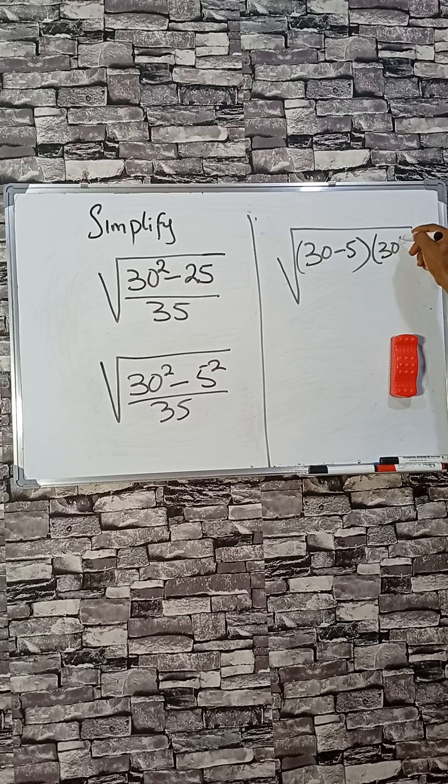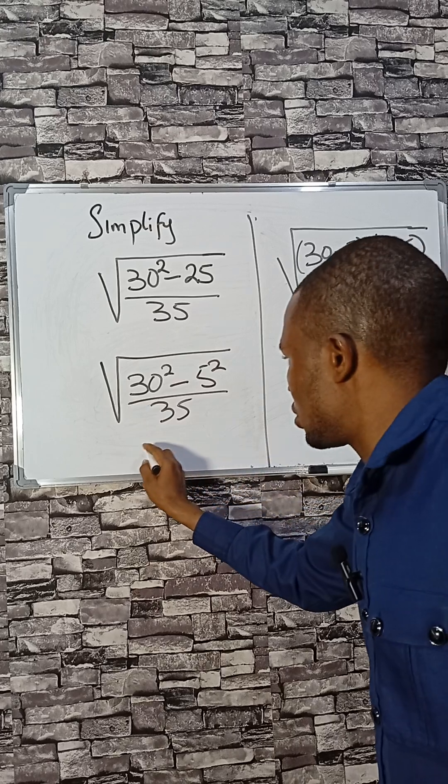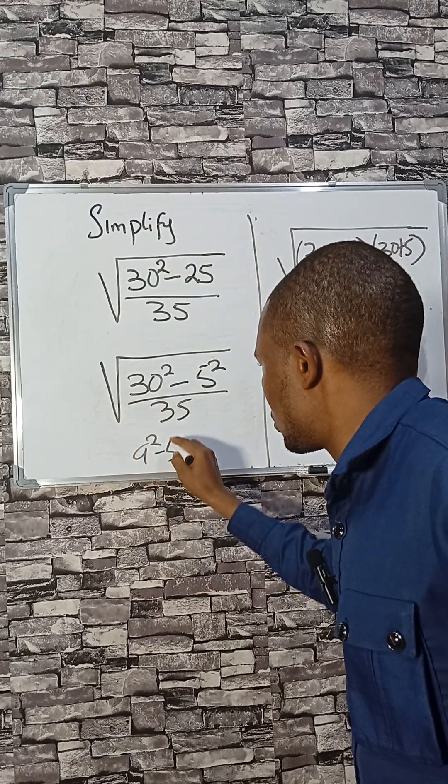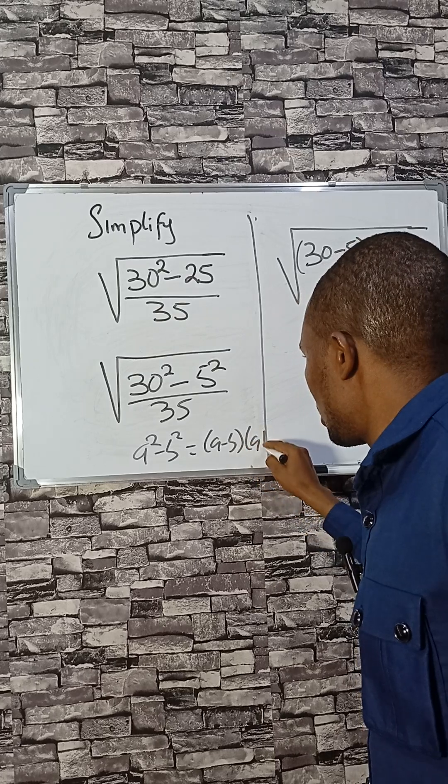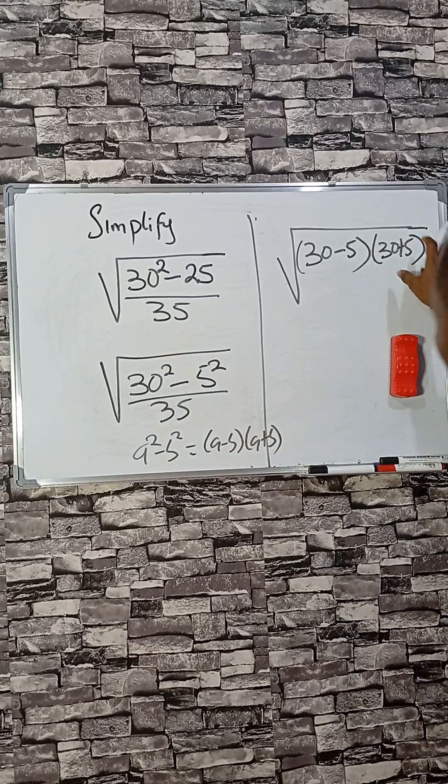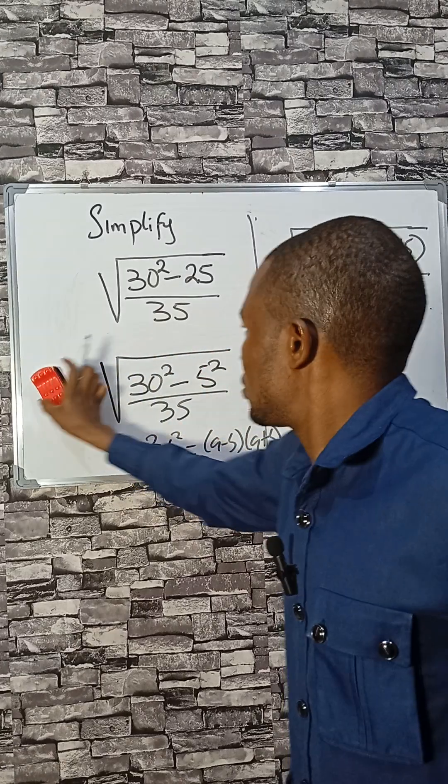Then 30 plus 5. This is, of course, our form of a squared minus b squared, which is a minus b times a plus b. So that's what I'm employing here, divided by 35.